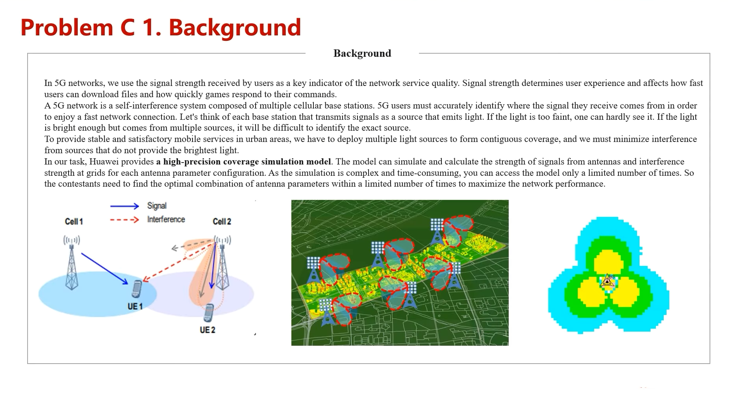Let's first have a look at the background. In the fifth generation, signal strength is the most important index of network service. It determines the user experience, the speed you download files, and the speed you upload files. To guarantee stable fifth generation service in urban areas, we need to minimize the interference between cells.